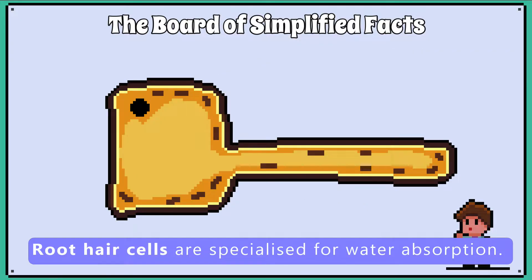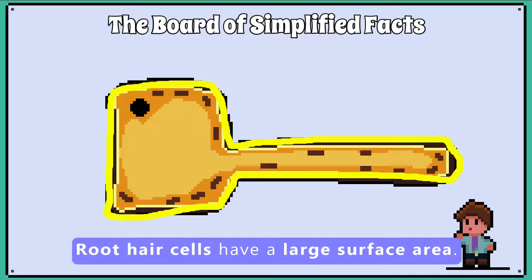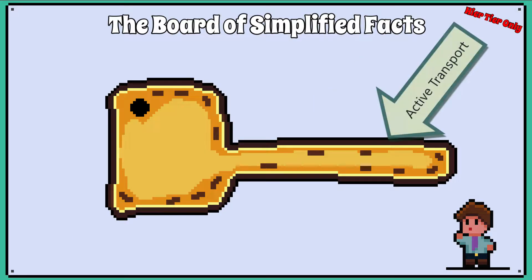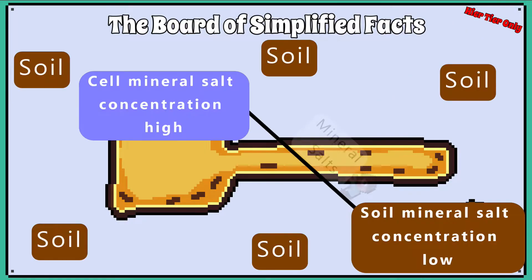Remember that in the cells topic, we covered that root hair cells are specialised for water absorption by having a large surface area and containing lots of mitochondria. The root hair cells need lots of mitochondria because they use active transport to manipulate the water concentration within the root to encourage osmosis.